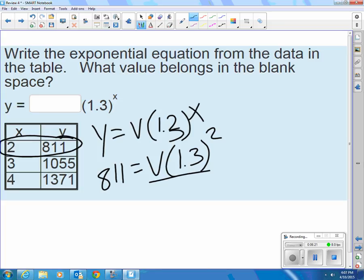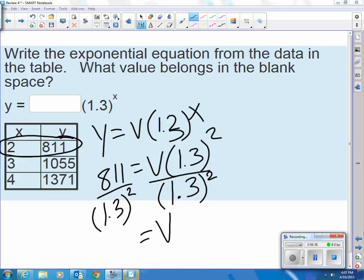Solving that for v. Well it's being multiplied by 1.3 squared. So the opposite of that is to divide by 1.3 squared. 811 divided by 1.3 squared is 480. Well that makes sense because it's getting larger by 30% each time. So the starting value is going to be less than 811.